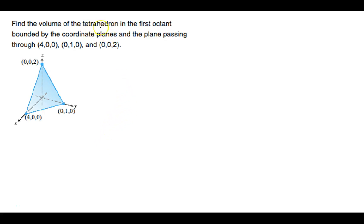Find the volume of the tetrahedron in the first octant bounded by the coordinate planes and the plane through these three points: 4 on the x, 2 on the z, and 1 on the y.